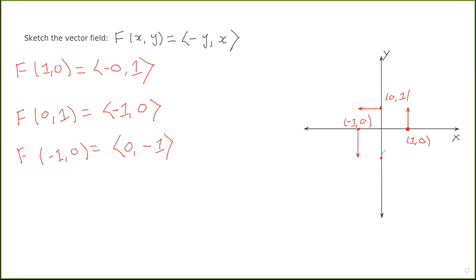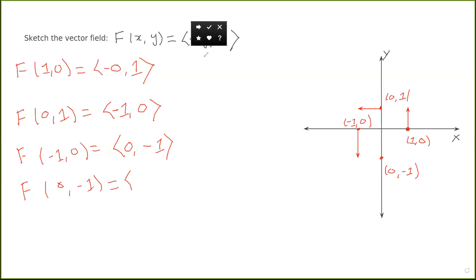For this round of points I'll look on the negative y-axis: x = 0, y = -1. f(0, -1): the first component is minus y, y equals minus one, so the first component is one; the second component is x, which is zero. So this is just a rightward-pointing unit vector — we get something like this.